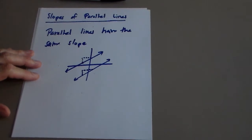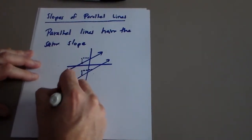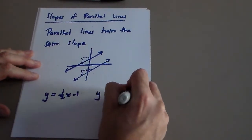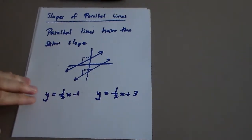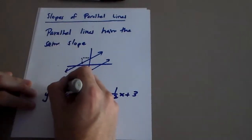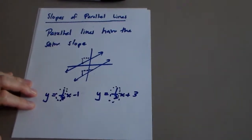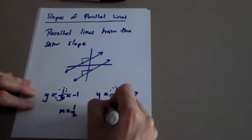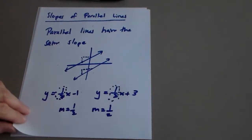Sometimes the equation might look like this: y equals one-half x minus 1 and y equals one-half x plus 3. You can tell those two are parallel because the slopes are the same — the m here is one-half and the m there is one-half, so those two lines are parallel.